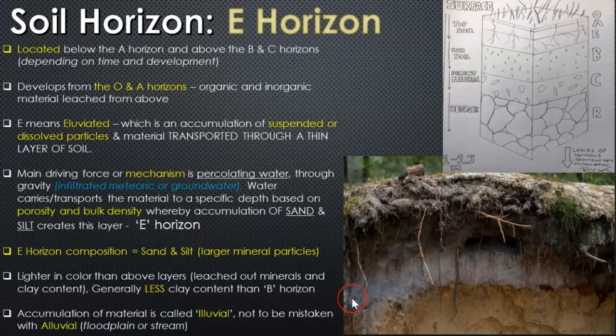The E horizon does have a mineral component, pore spaces, water, air, and maybe some microorganisms or decomposition at that depth. But you're going to have a concentration of sand and silt, because clay — one of the three main mineral constituents of the soil — gets washed out down to the B horizon through the eluviation process. So the clay accumulates in the B horizon.